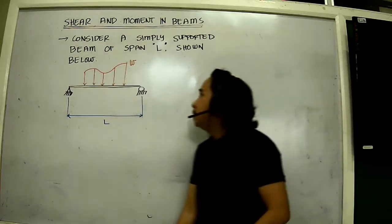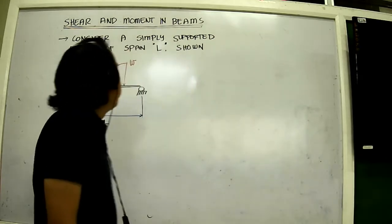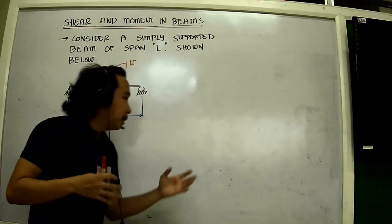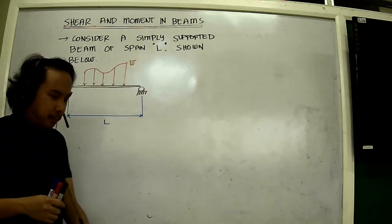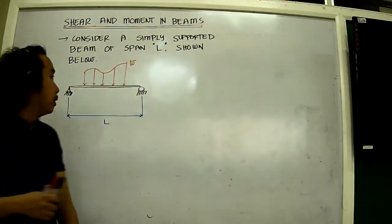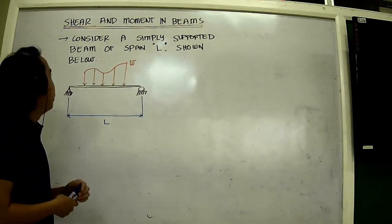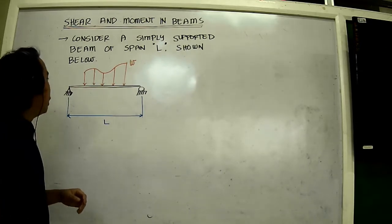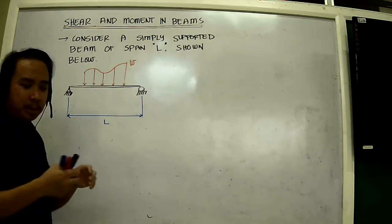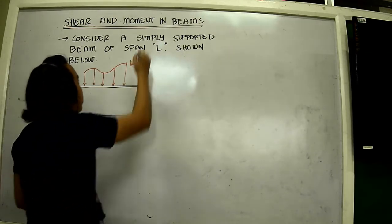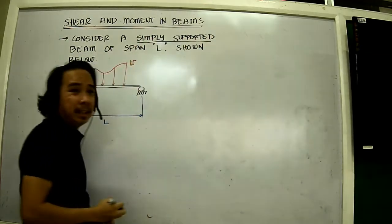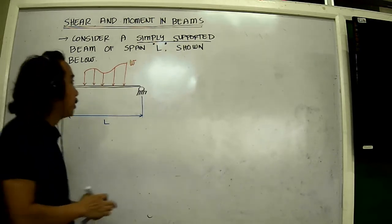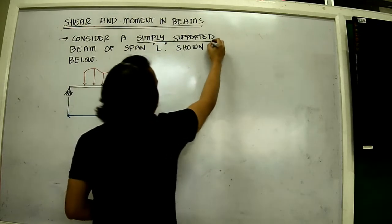Okay, so shear and moment in beams. Before we talk about the nitty-gritty details, we need to consider a sample structure shown here. We need to consider a simply supported beam of span L shown in the figure. Now when you say simply supported, this term over here refers to simple supports, the pin and roller support.